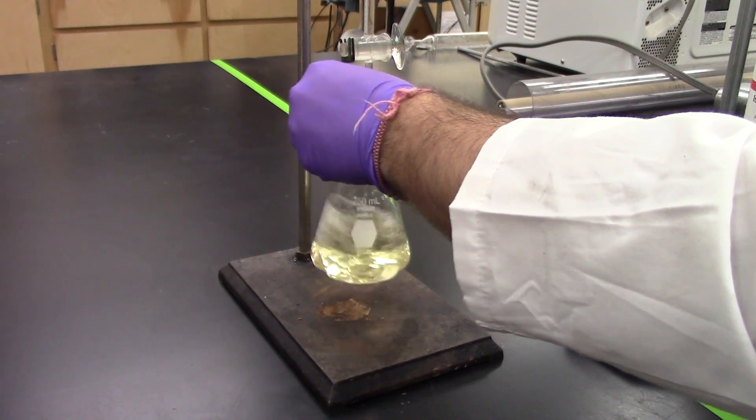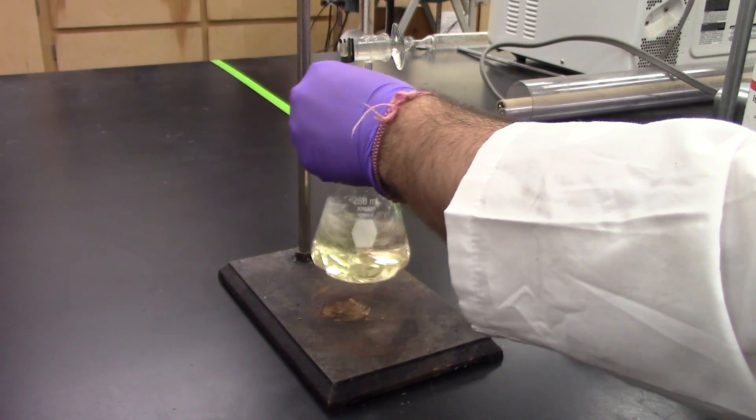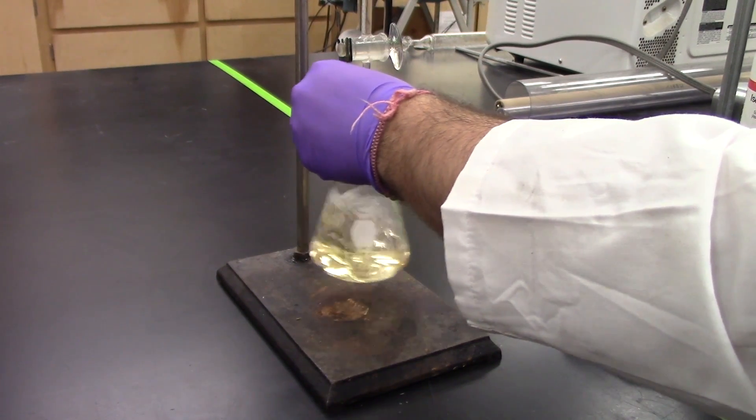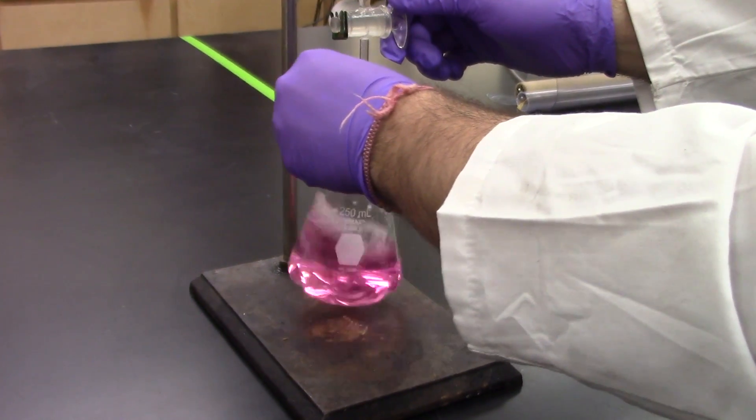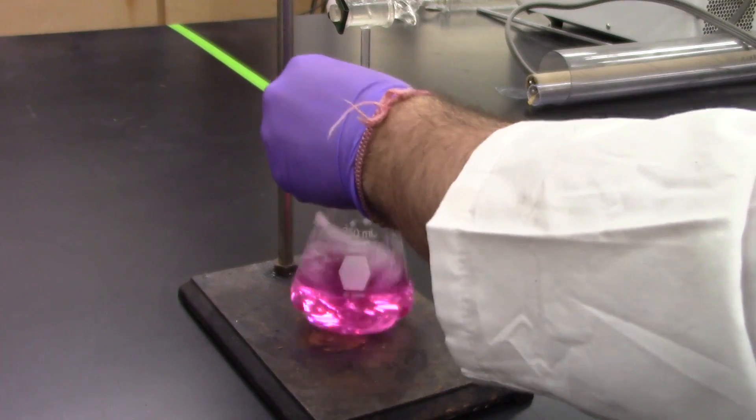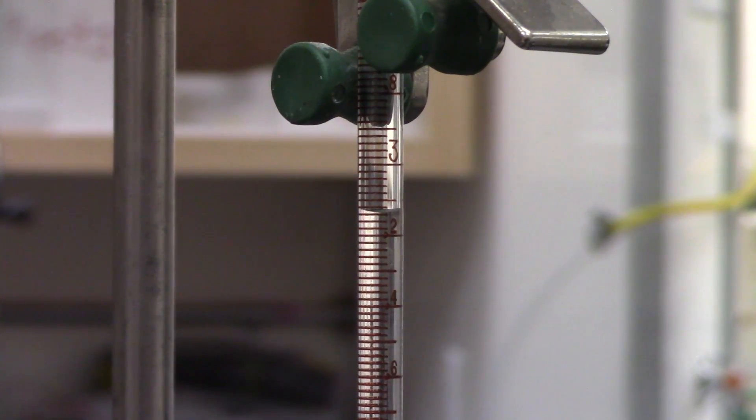Titrate while stirring with potassium hydroxide titrant to the endpoint, which is a definite color change to orange or green-brown color that persists for at least 15 seconds. Record the milliliters of titrant consumed.